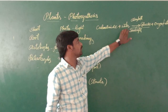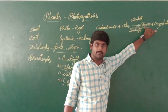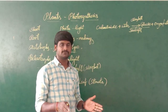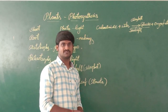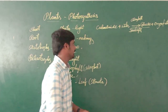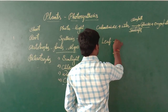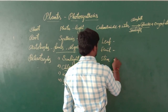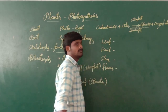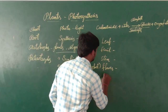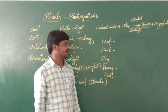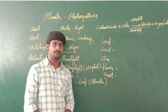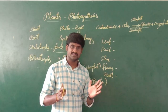The plants can store the food in different parts. They can store it in the leaves, in the fruit, in the stem, in the flower, or in the root. Different plants can store food in different parts.